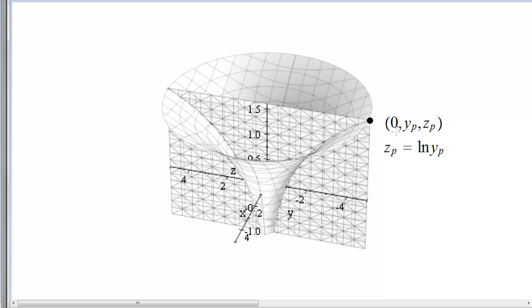And zp was our particular value of z and y sub p, let's let that be the particular value of y that corresponds to this point. And of course, in here, the x coordinate will be zero and the equation would be satisfied, our original equation, that is z equals natural log of y.